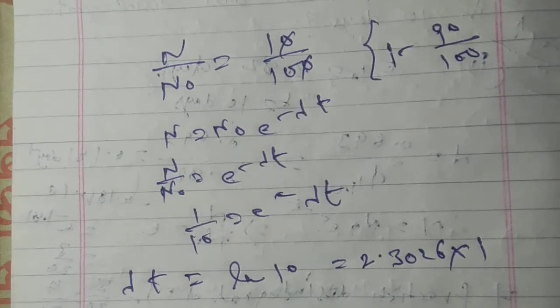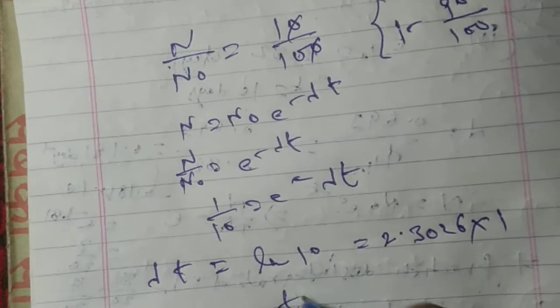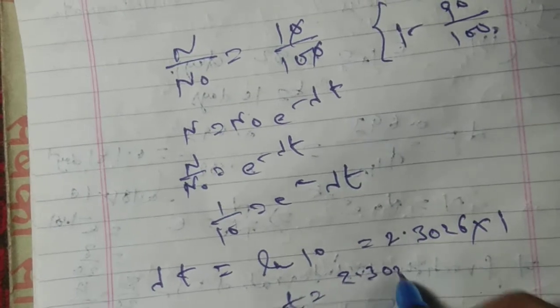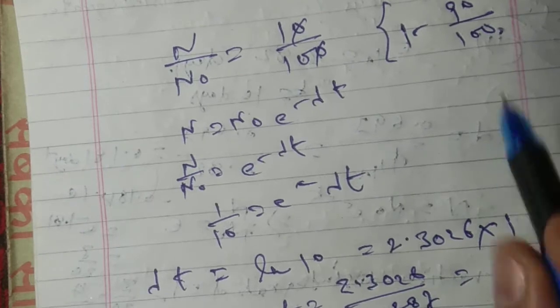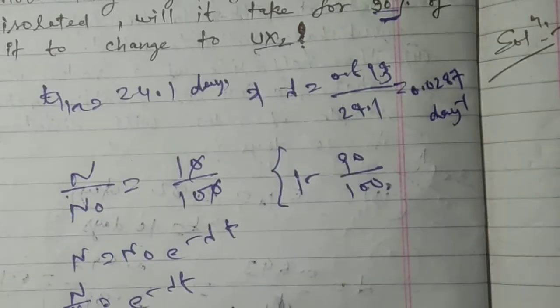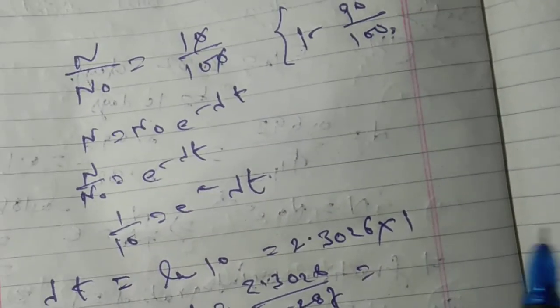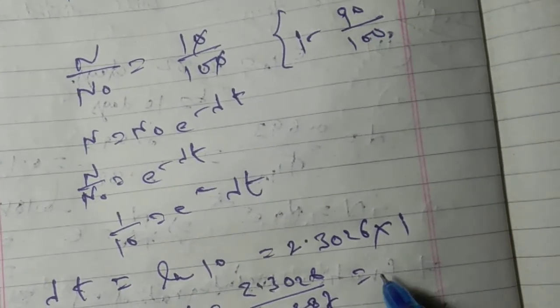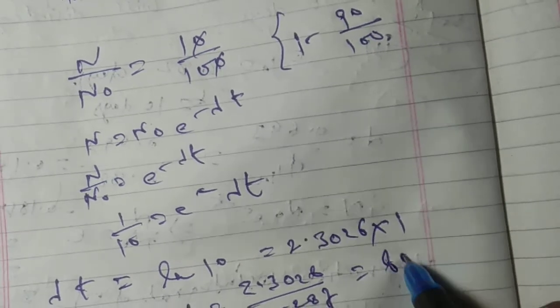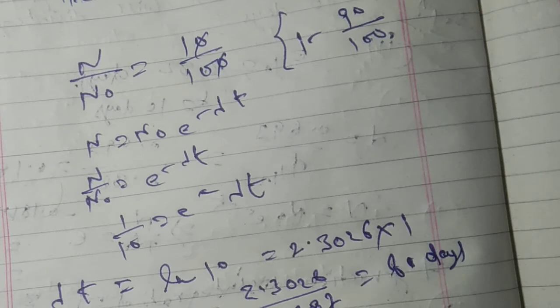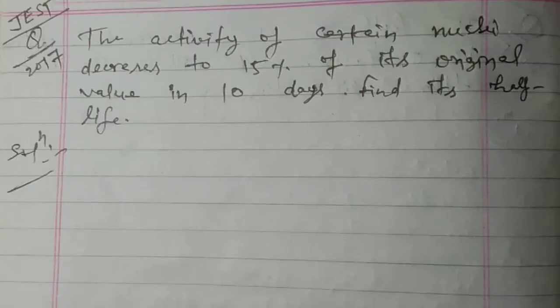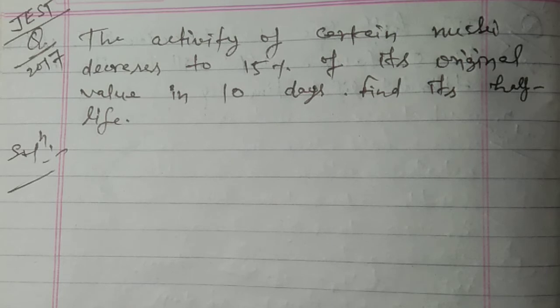Which is equal to 2.3026 into log 10 which is 1. So t equal to 2.3026 upon 0.0287, this is the value of lambda here. So the final answer is after dividing we get nearly 80 days. So this is the answer.